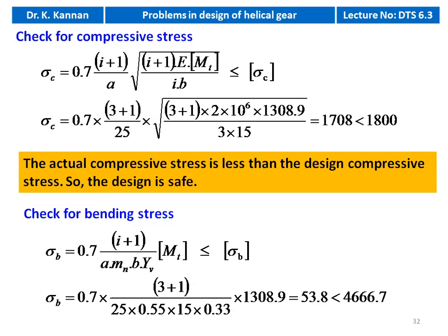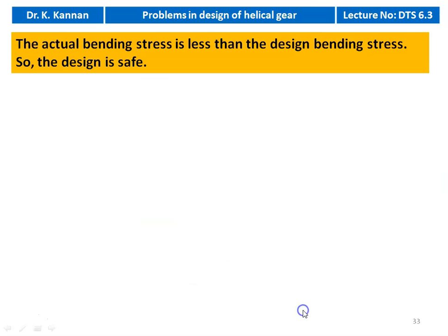Checking bending stress: σB = 0.7 × (i+1) / (A × mn × B × YV) × MT = 0.7 × (3+1) / (25 × 0.55 × 15 × 0.295) × 1308.9 = 53.8 kgf/cm², which is much less than the design bending stress of 4666.7 kgf/cm². The design is safe.